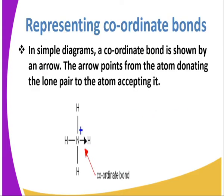How do we represent the coordinate or the dative type of bond? In simple diagrams, a coordinate bond is shown by an arrow. The arrow points from the atom donating the lone pair to the atom accepting the lone pair of shared electrons. There you can see we have an arrow, and overall the compound now becomes positively charged.